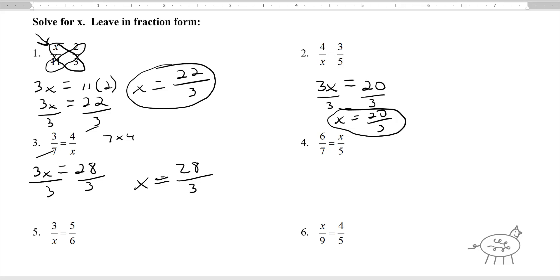Okay, one more. So 7 times x is 7x. 6 times 5 is 30. And then you divide both sides by 7. So x equals 30 over 7.